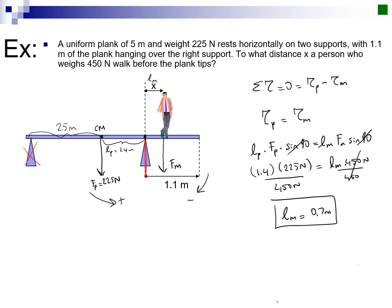Plugging in values, I have 1.4 meters multiplied with 225 newtons equal to the leverage of the man multiplied with the weight of the man, which is 450 newtons. So this means I need to divide both sides by 450 newtons, and the leverage for the man is calculated to be 0.7 meters. So this is how far from the support that he sees close to, he can move.